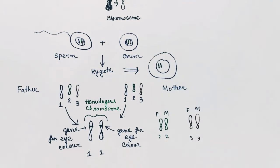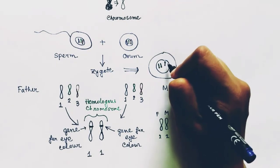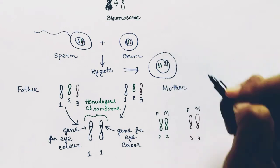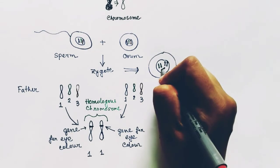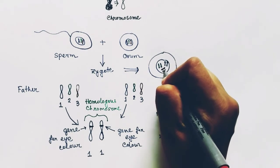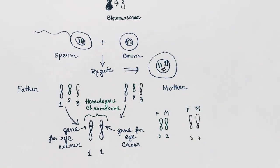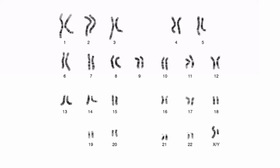Inside the zygote we get a total of six chromosomes and three pairs of homologous chromosomes. In each pair, one is from the father side and the other is from the mother side, having the same genes. In the case of humans, we have 23 pairs of homologous chromosomes, or a total of 46 chromosomes.